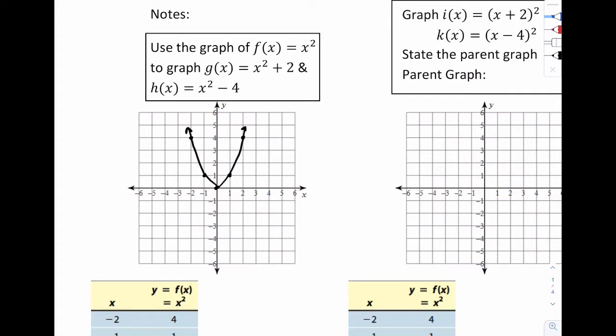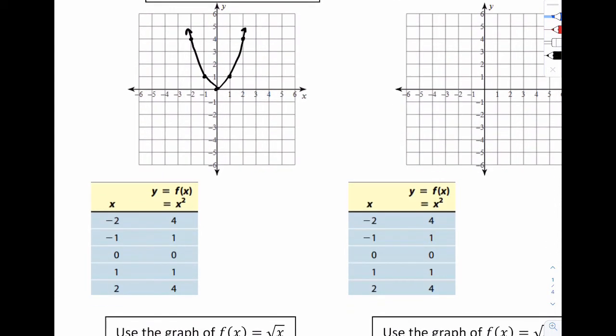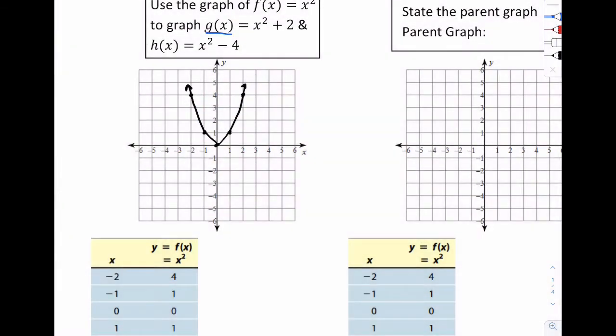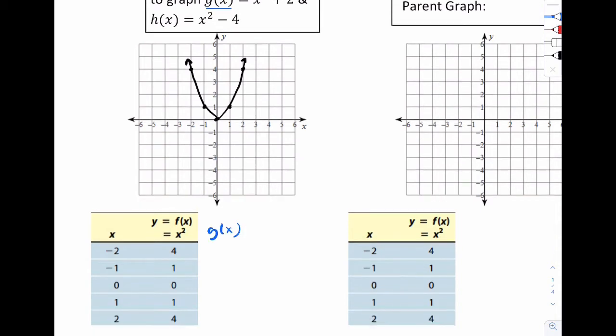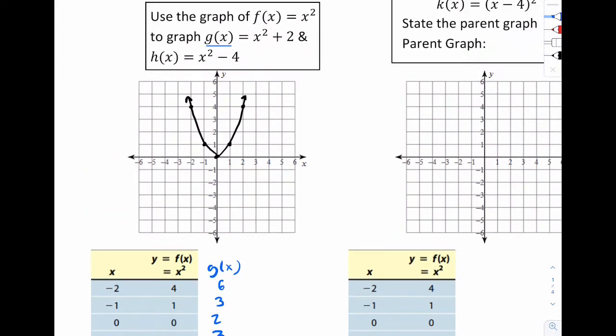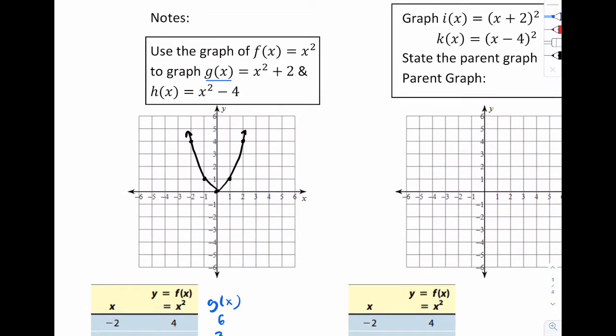Then it says we're going to use this graph to graph x squared plus 2 and x squared minus 4. So I know it's intuitive but I do want to do this kind of methodically. So g(x) we're going to do in blue and I'll add to my chart here. If I'm going to add 2 what that means is simply look at all these y values and add 2. So 6, 3, 2, 3 and 6.